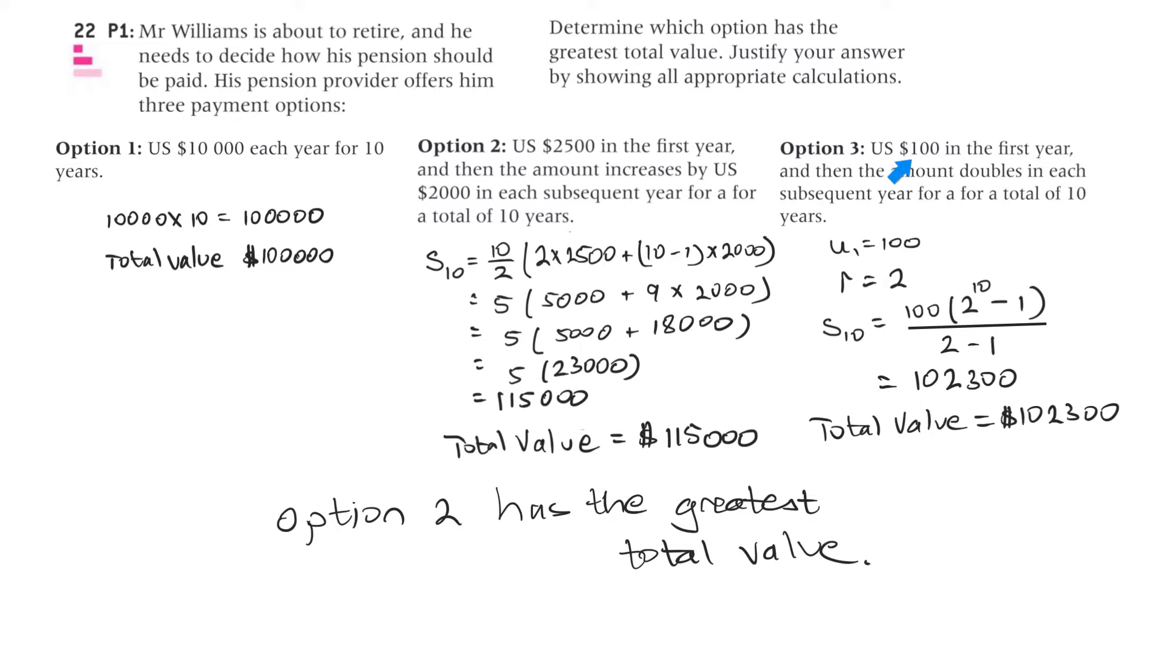And finally, option 3, that's $100 in the first year, and then the amount doubles in each subsequent year for a total of 10 years. So this is geometric, so that first one is 100, and then it doubles, so R is equal to 2, and then we use the summation formula for a geometric sequence here where R is greater than 1, and that resolves to 102,300. And so the question was, determine which option has the greatest total value, and so that would be option 2 has the greatest total value, because it's $115,000.